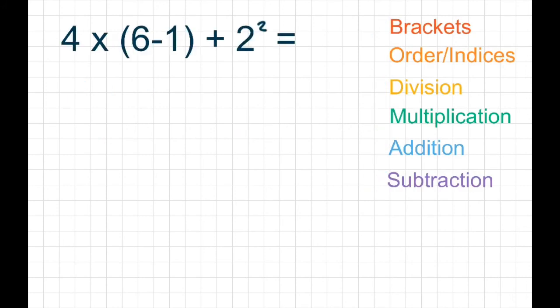Okay, our final example. I've saved the best for last. A really tricky one here that's got lots of different symbols in it. So let's start with the brackets. 6 take away 1 is 5. And we move everything else down. So 4 times 5 add 2 squared.